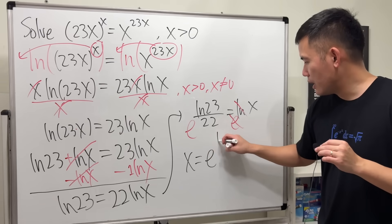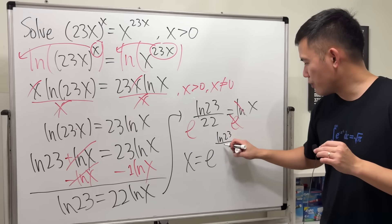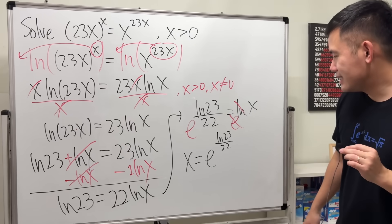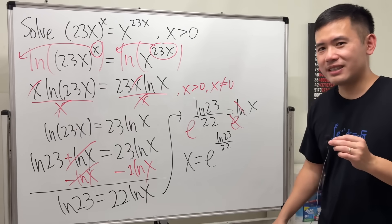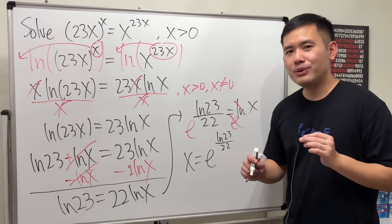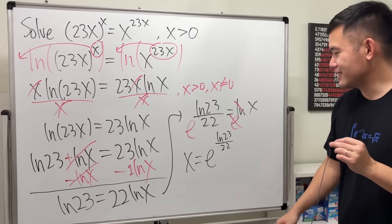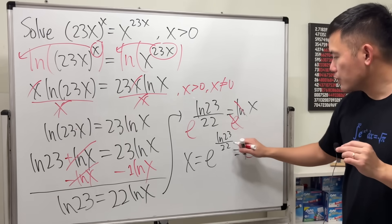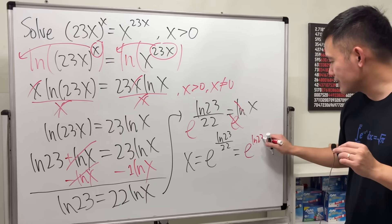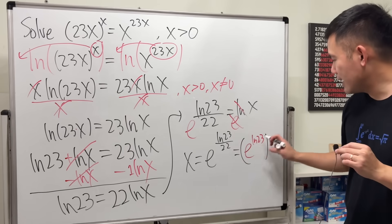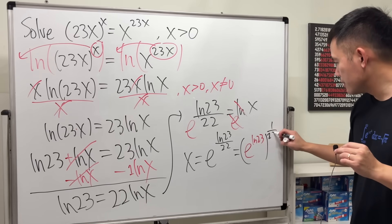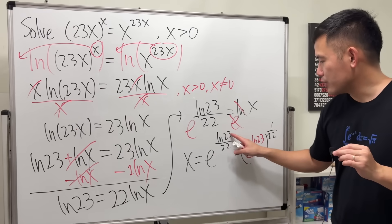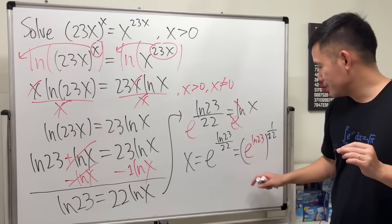Here I'm going to use the law of exponents. First, I'm going to write it as e raised to the ln(23) first, and then raise that to the 1/22. The reason we can do that is because this is ln(23) times 1/22, just like this.